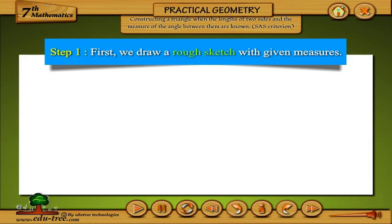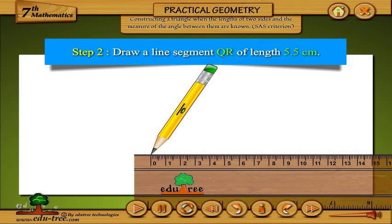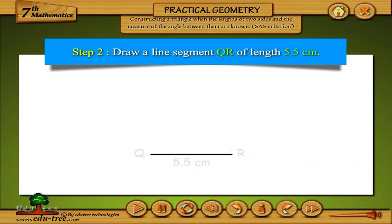Step 1: First, we draw a rough sketch with given measures. Step 2: Draw a line segment QR of length 5.5 cm.